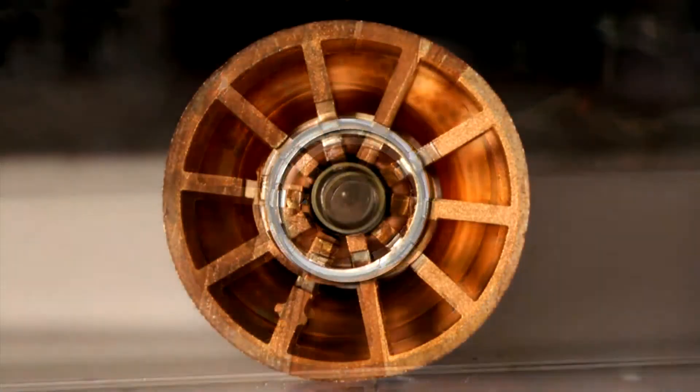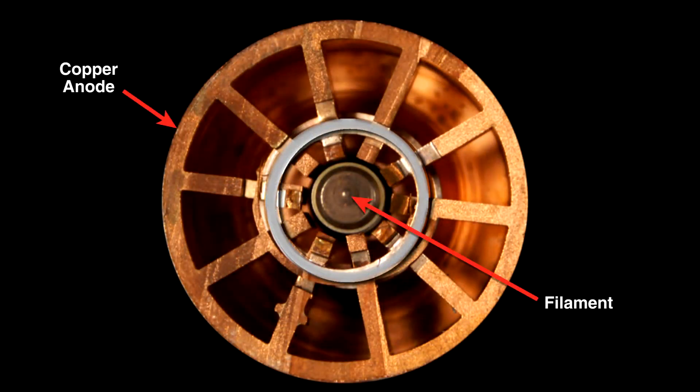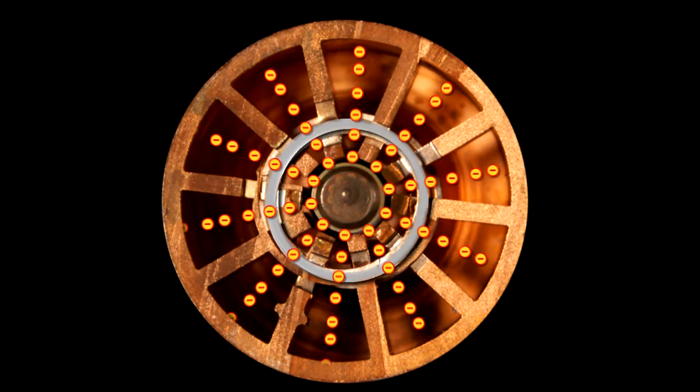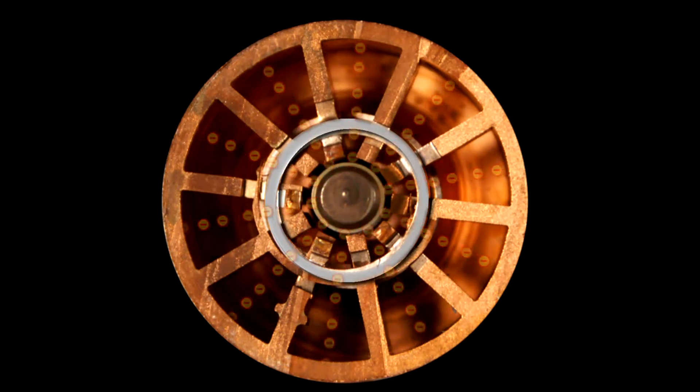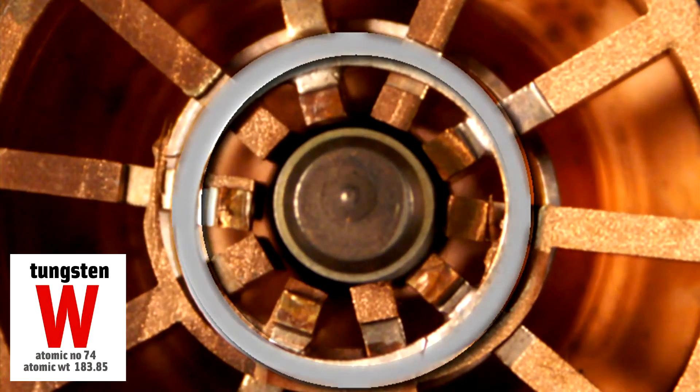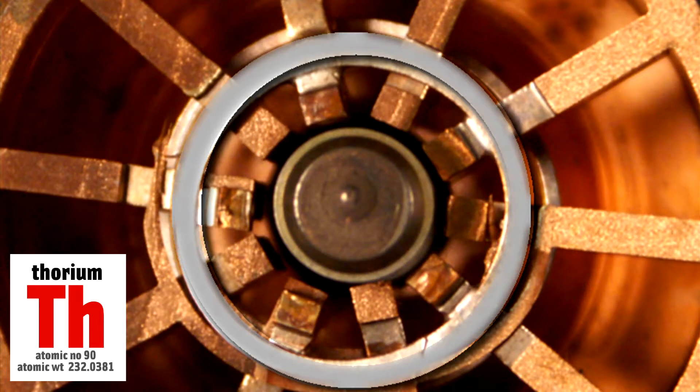You apply a large voltage across both the inner filament and the circular copper outside. This voltage boils electrons off the center filament and they fly toward the circular copper section. The filament is made from tungsten and thorium. Tungsten, because it can withstand high temperatures, and thorium, because it's a good source of electrons.